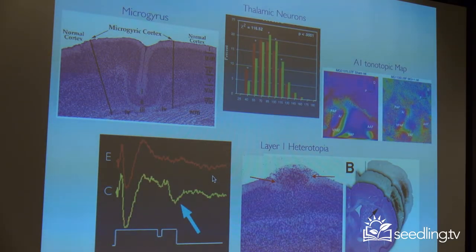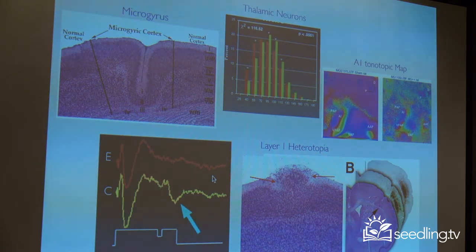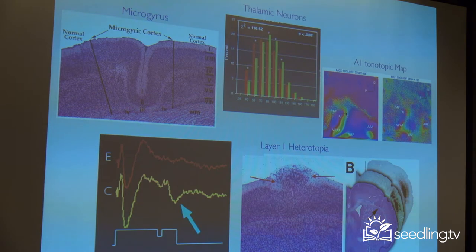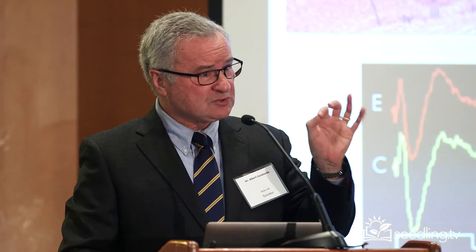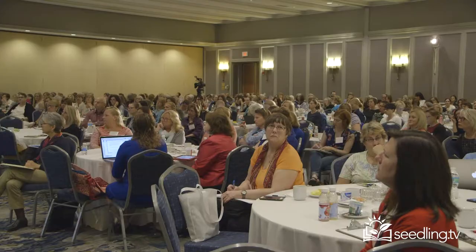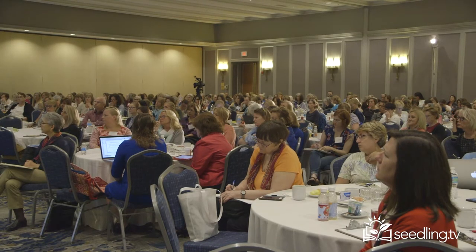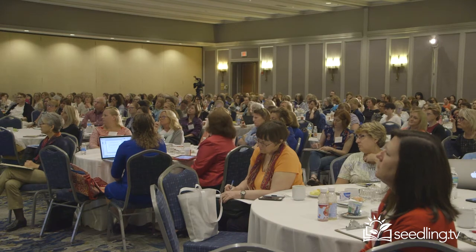We also show a map of the auditory cortex and its tonotopic representation — different tones represented by different colors. By introducing this tiny malformation, we really degrade the map; it becomes a much poorer map. We also change connectivity between different parts of the brain. If you did that in an adult — we did it in adult rats — nothing like that happens. It's only because the very young animal is very plastic and reorganizes broadly from something very focal.